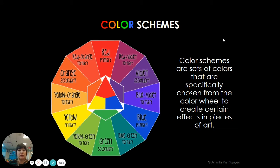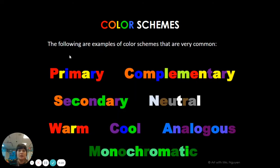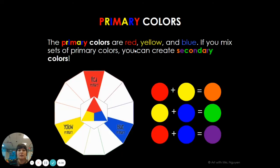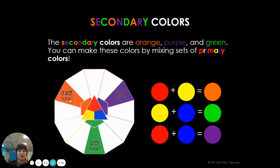Colors can also be organized into color schemes or color families. Color schemes are a group of colors that have a name. Some include primary — red, yellow, and blue, which are the colors that when you mix two primaries you get a secondary color. The three secondary colors made by mixing the primaries are orange, green, and purple.